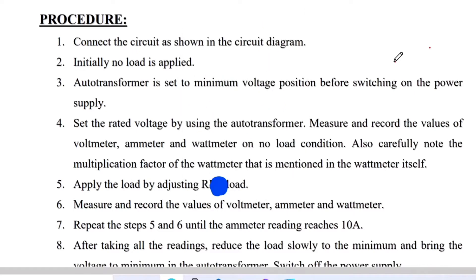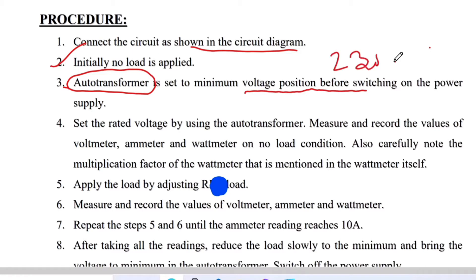Going through the procedure: connections are made as per the circuit diagram. Initially, no load condition is applied — none of the load is applied. We are using a special arrangement of an auto transformer to give voltage gradually from minimum to maximum 230 volt. By using the auto transformer, 230 volt is set up, then measure and record the values of voltmeter, ammeter, and wattmeter under no load condition.